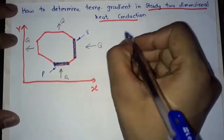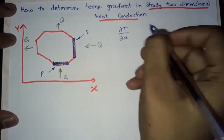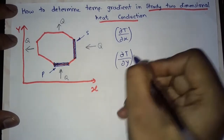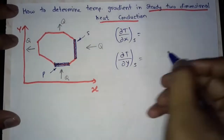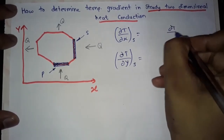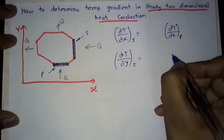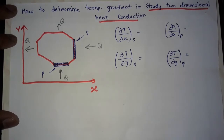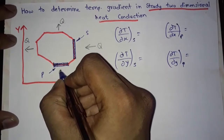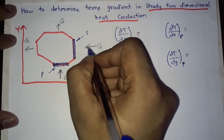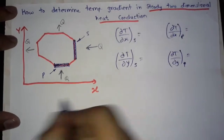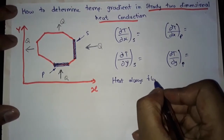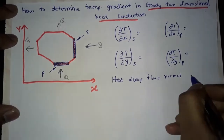There are ∂T/∂x and ∂T/∂y for surface S, and ∂T/∂x and ∂T/∂y for surface P. Heat always flows in the direction normal to the surface.